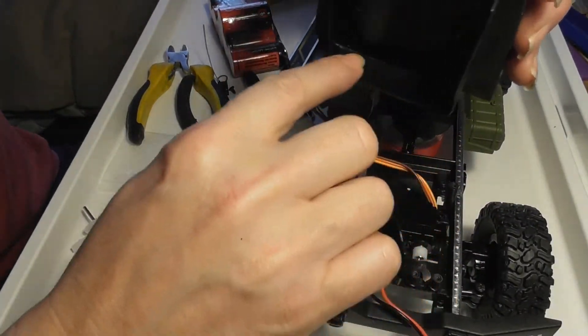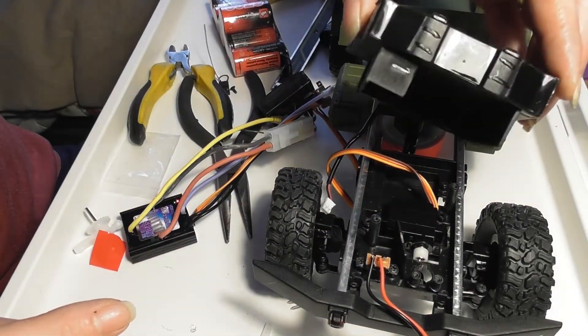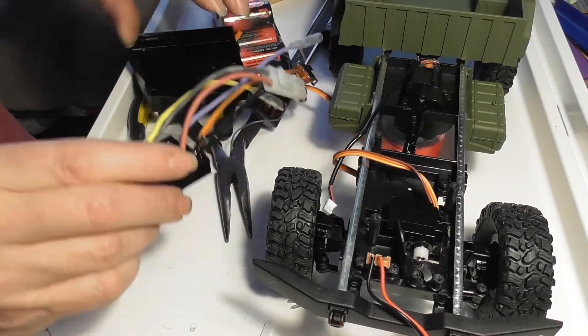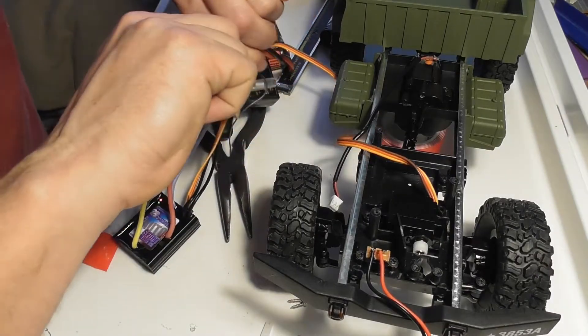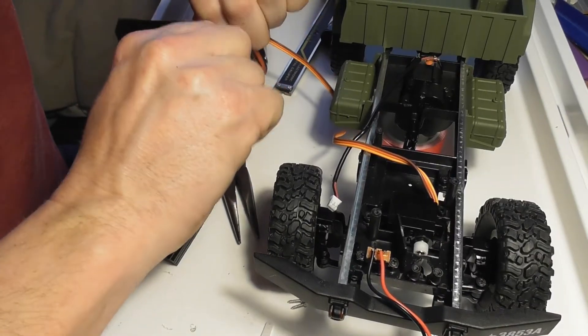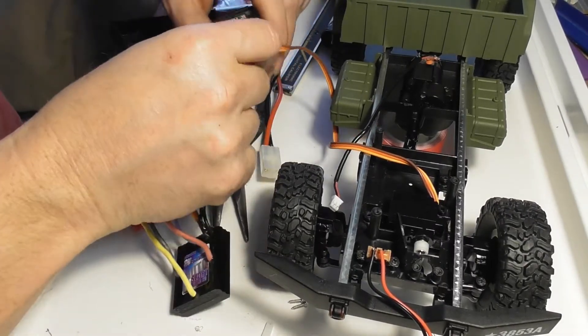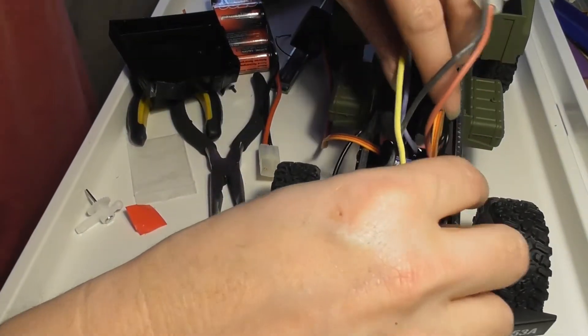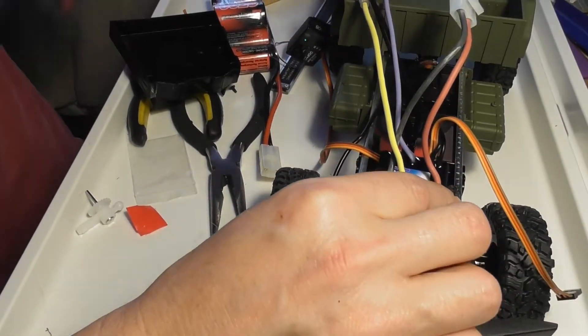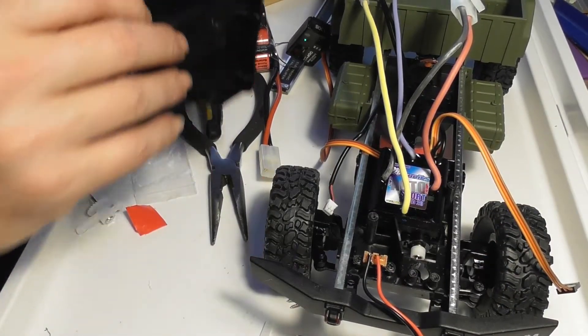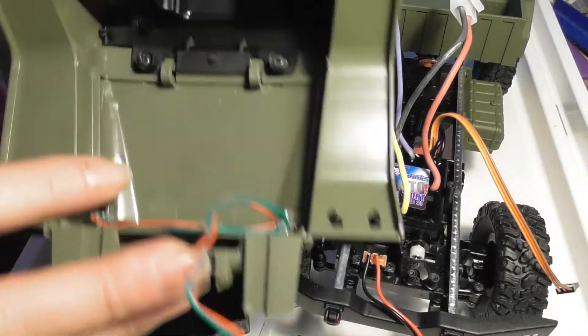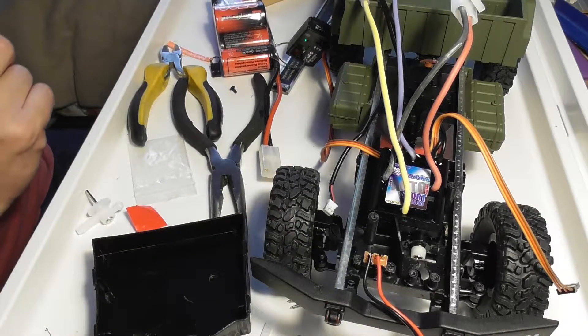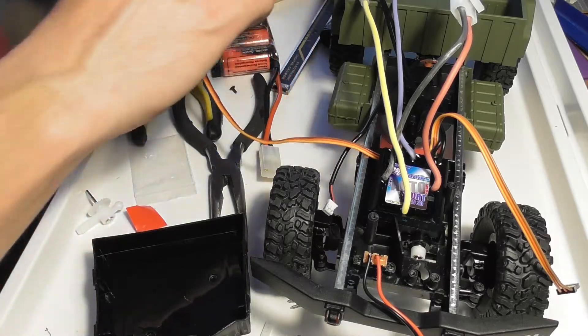I might need to take some plastic out of the back here to allow wires to get out. I've decided that the receiver will actually be able to go in the back of the truck in this area here, because when we first looked it had plenty of space in it.